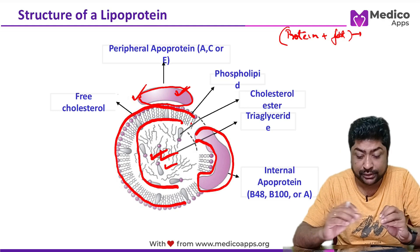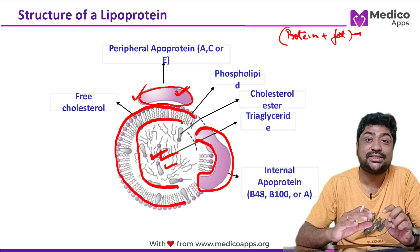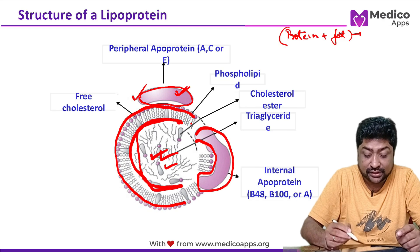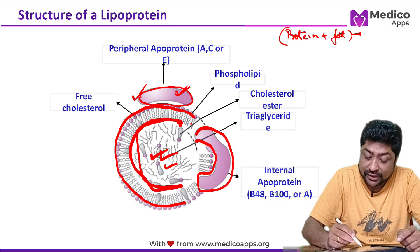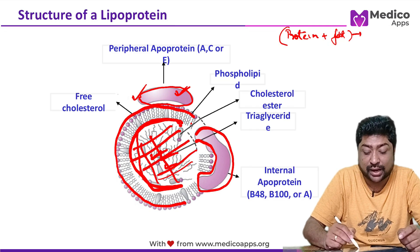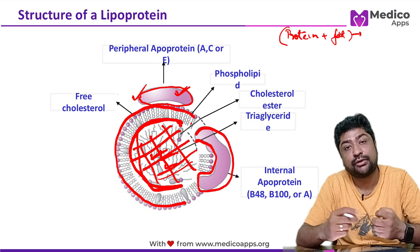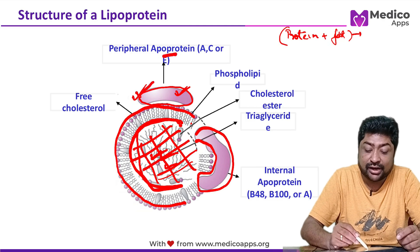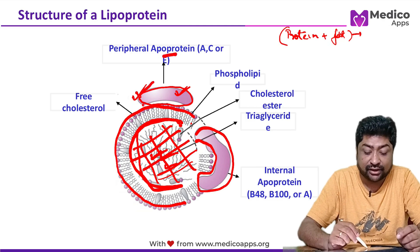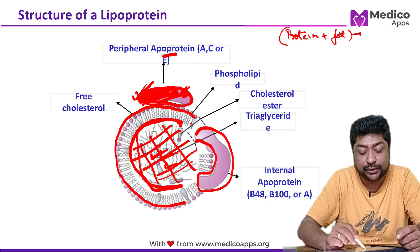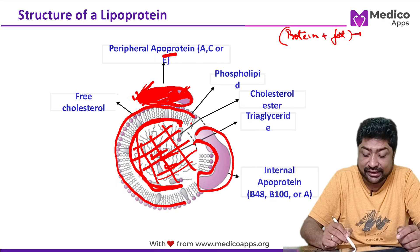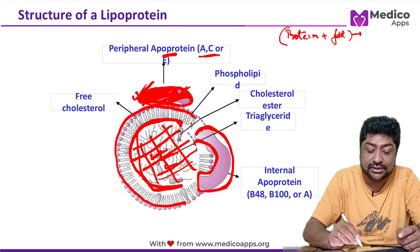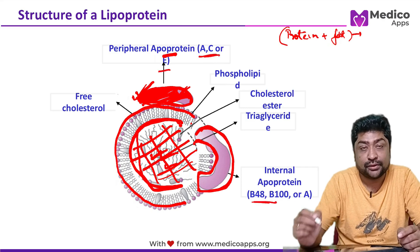The general structure of a lipoprotein: they have a phospholipid layer that creates a container, and inside this container is whatever lipid they carry — some carry cholesterol, some carry triglyceride. Peripheral apoproteins lie completely on the surface, while integral apoproteins get integrated with the membrane. The peripheral apoproteins are A, C, and E; the integral ones are B48 and B100.